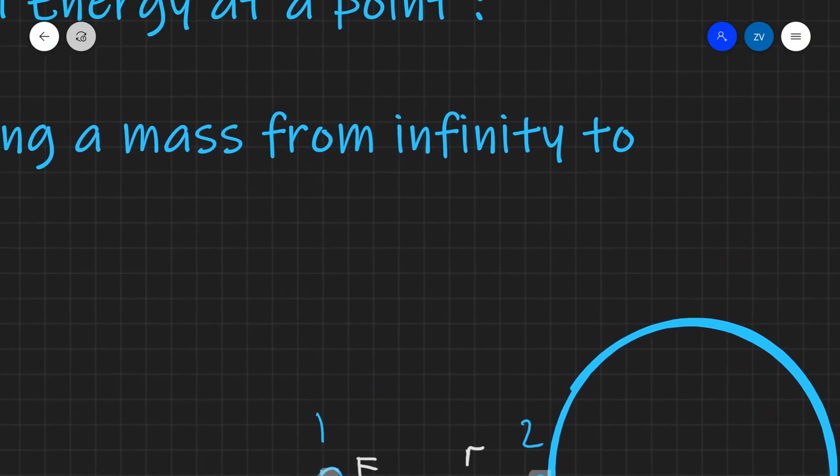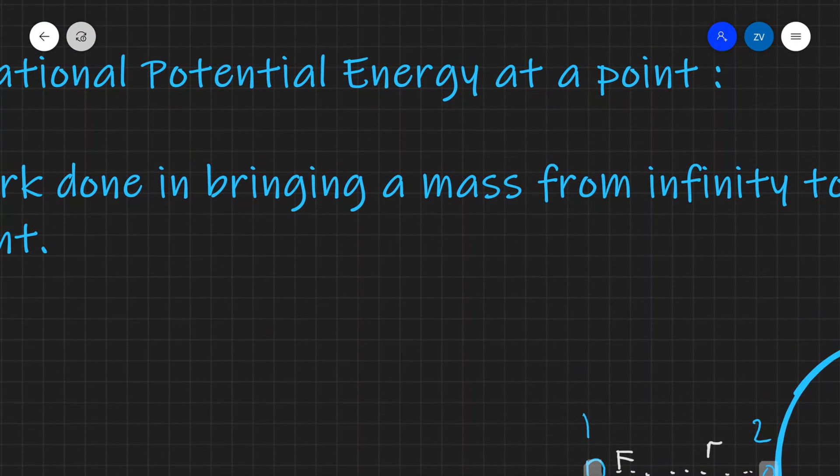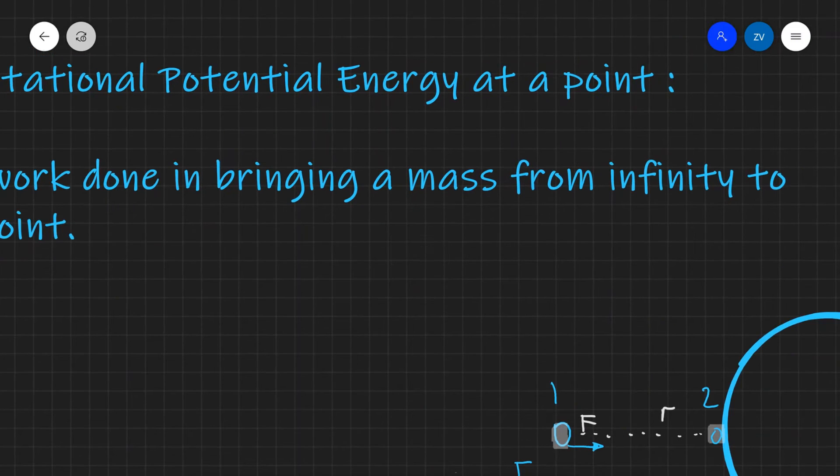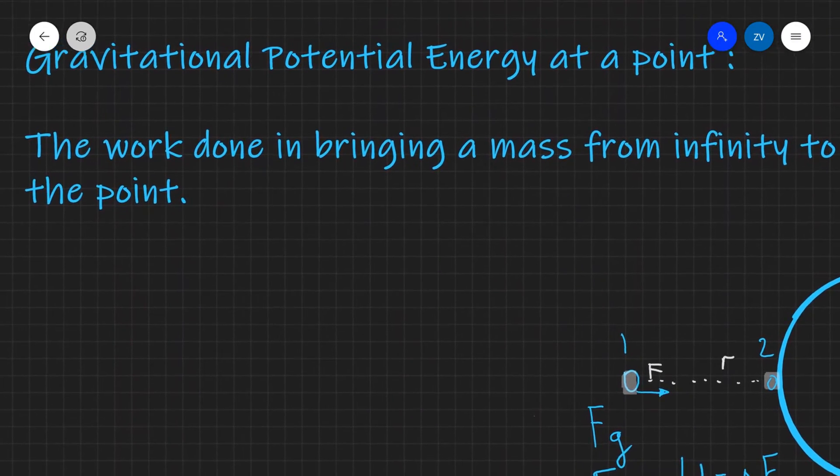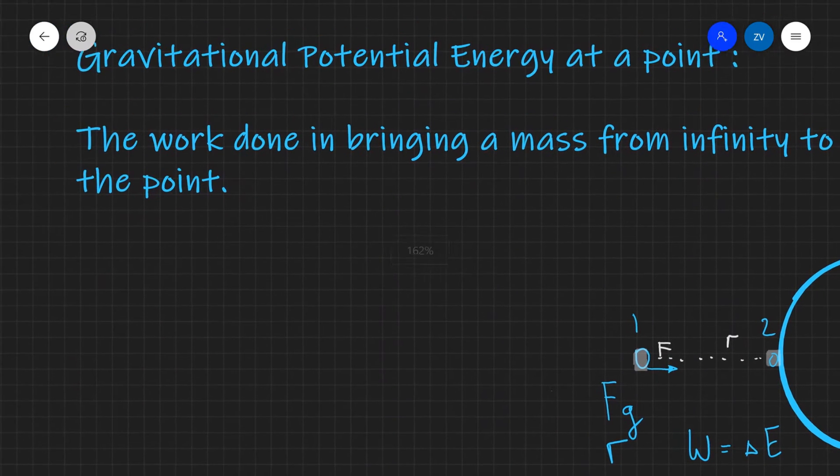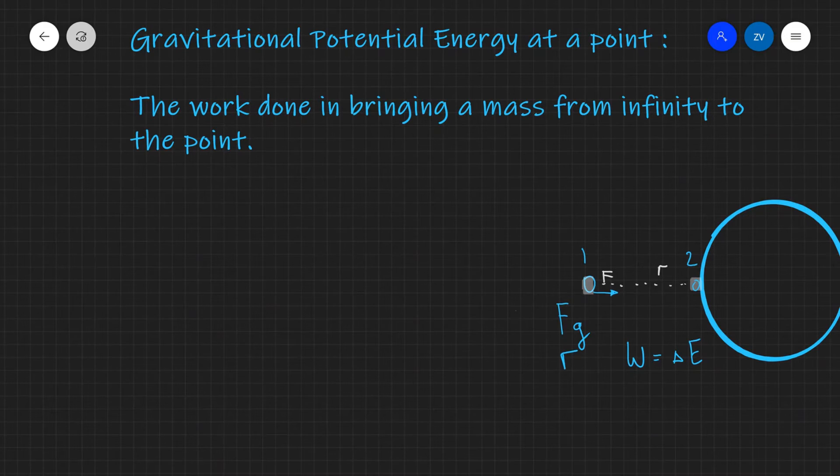So gravitational potential energy is actually defined as the following. So let me just zoom out a little bit more. It's the work done in bringing a mass from infinity to a point in the gravitational field.